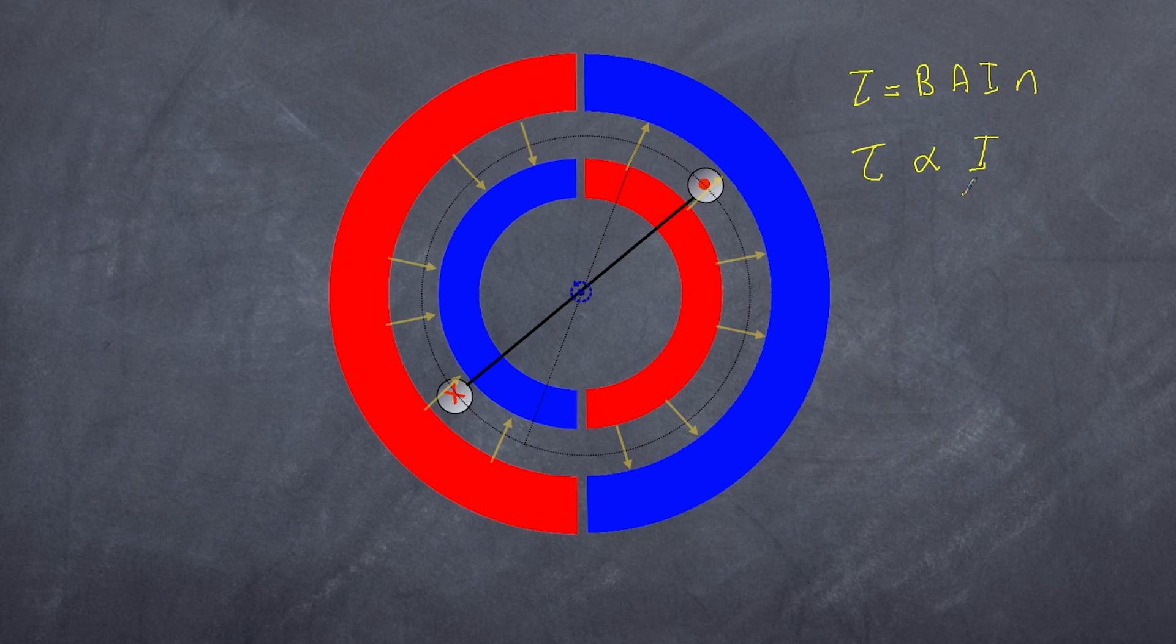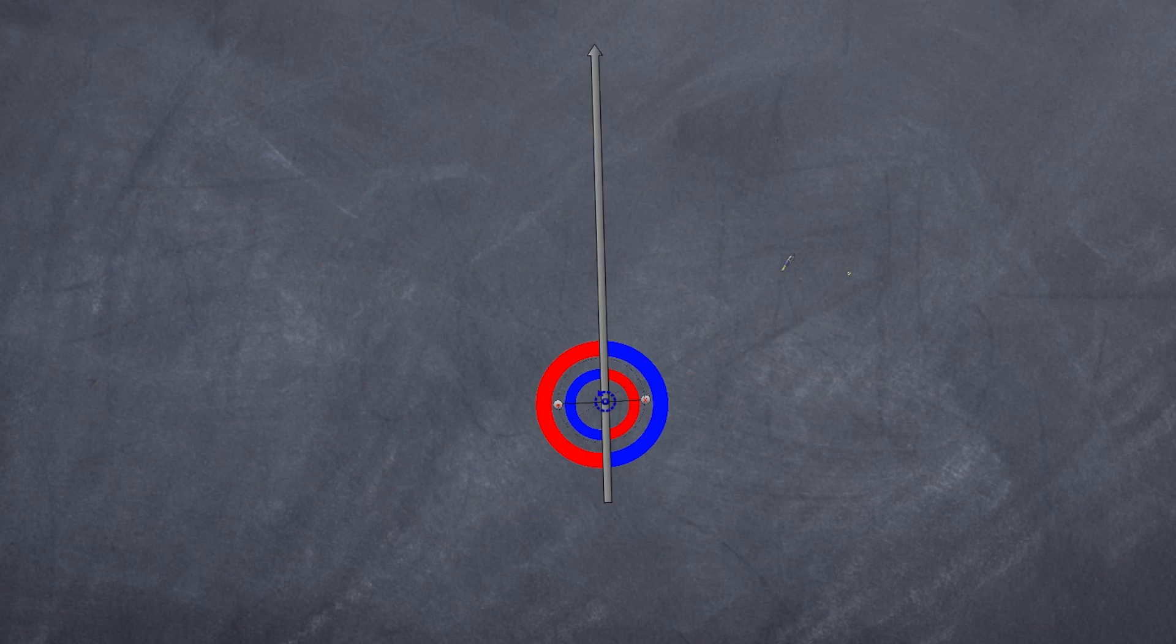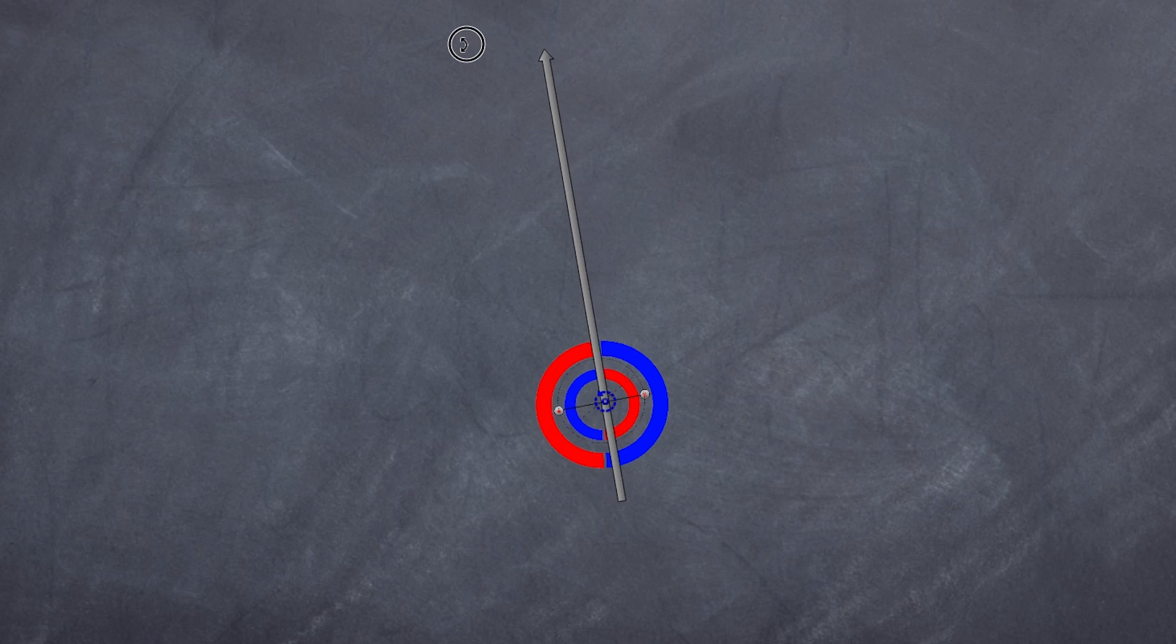That's the first step in understanding how galvanometers work. The second thing we now need to do is to add a pointer. Here's my pointer, and as you can see, if I rotate my loop, the pointer moves. The amount that it moves is determined solely by the current because torque is proportional to current. But we have a problem - as long as torque is applied, it should continue to turn.